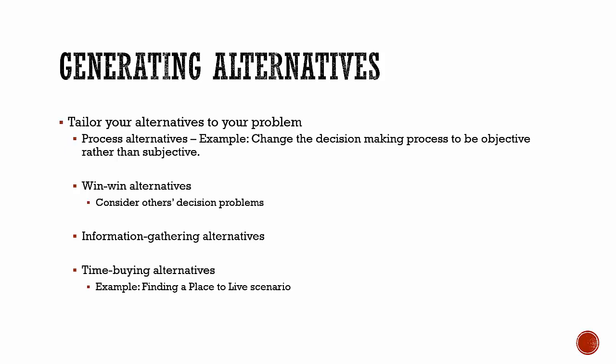The next step is to tailor your alternatives to your problem. One thing you can do is consider process alternatives — for example, you change the decision-making process to be objective rather than subjective. The Smart Choices book gives the example of having to choose who to give a ticket to between two friends. You only have one ticket and two friends who are interested, so how do you solve the dilemma? One way is by flipping a coin. You've changed the process of decision making to something that solves the problem and meets your objective of not making your friends angry.